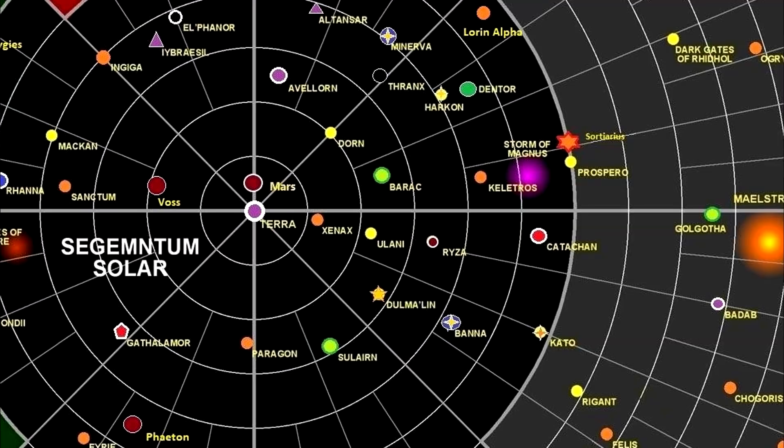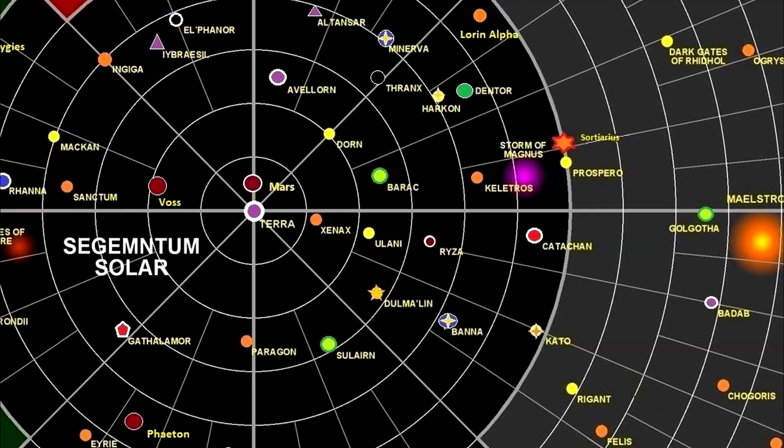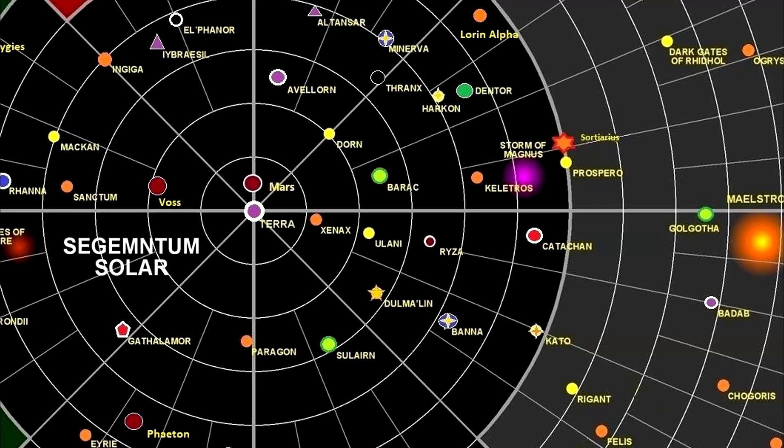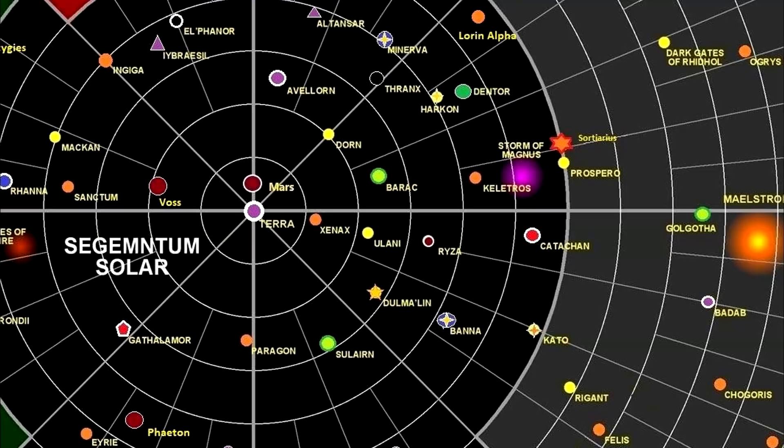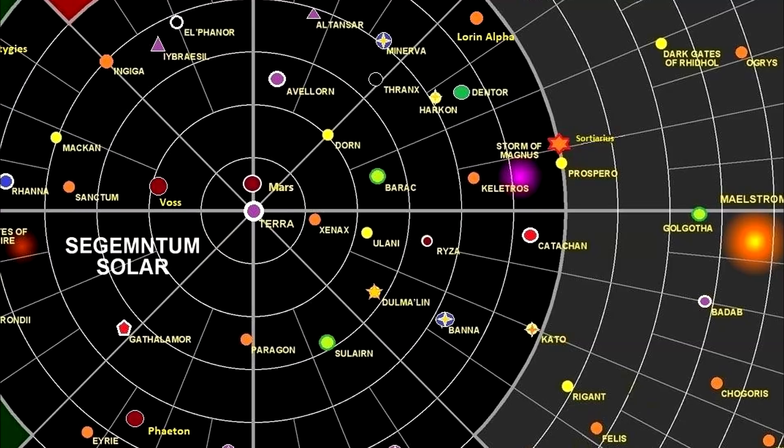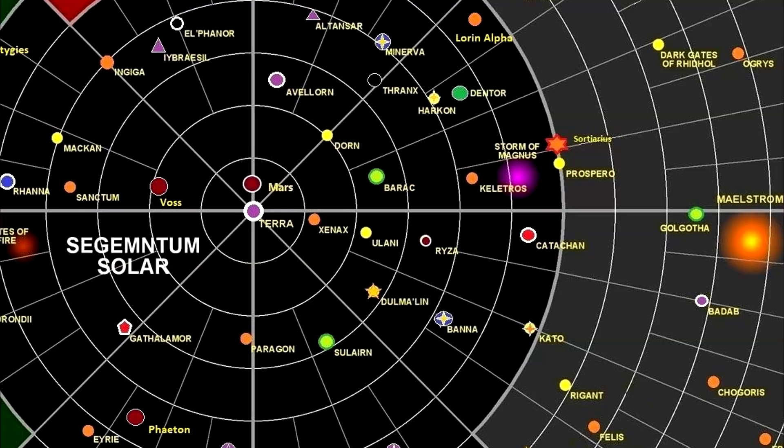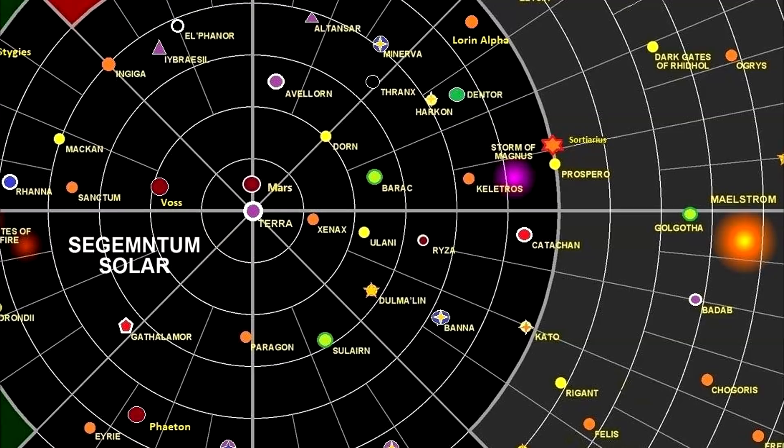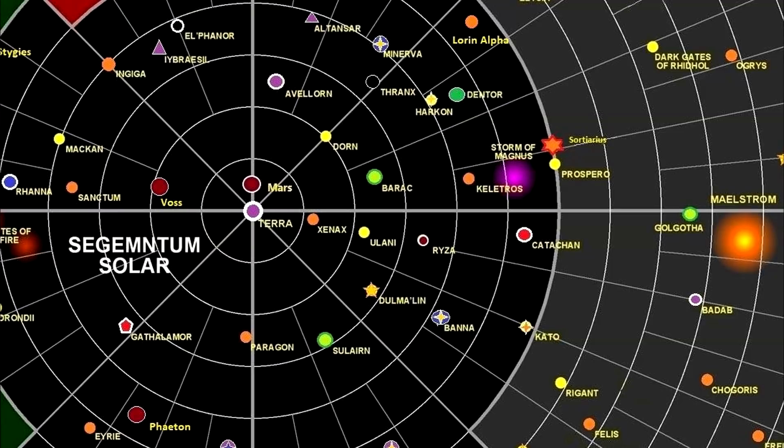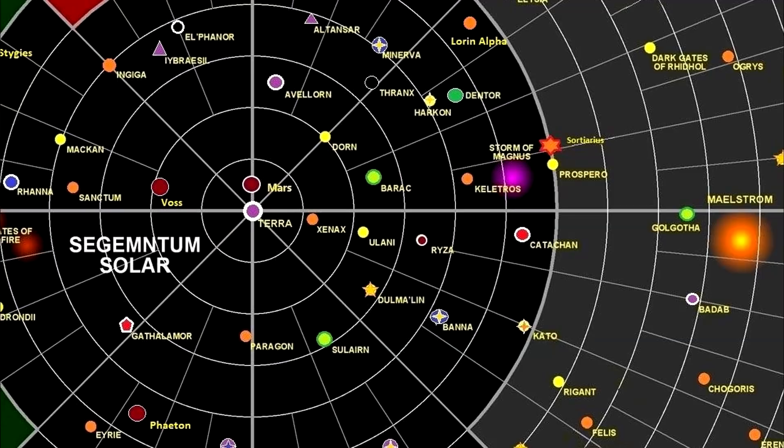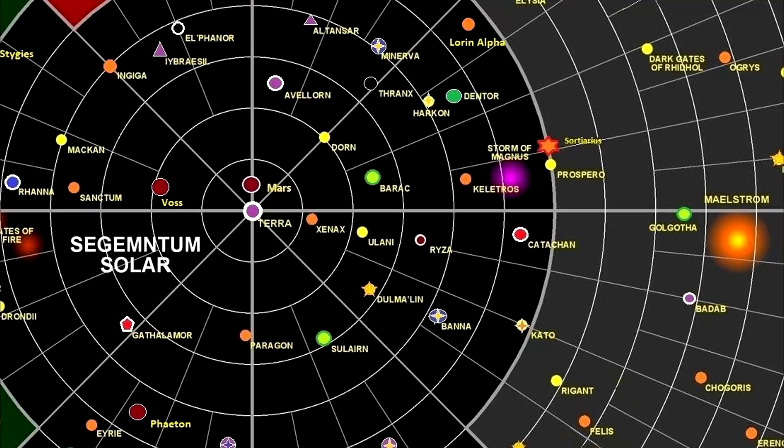Segmentum Solar worries itself primarily with the running of Segmentum Solar, and whilst the High Lords of Terra have hundreds, if not thousands, of issues placed before them every day that pertains to the various issues of running the segmentums, the sectors, or indeed even potentially solar systems or individual campaigns, by and large, the sub-sectors, the segmentums, the sectors, the solar systems, and the planets are left to their own devices. As long as they pay their allotted tithe to the Imperium, be it in men, material, food, resources of any kind, then they are, by and large, left to their own devices.